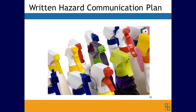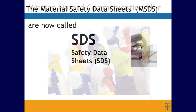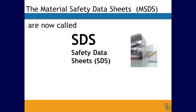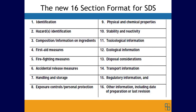In your written hazard communication plan, you'll also review material safety data sheets. Material safety data sheets have been given a new name — the word 'material' has been dropped; now they're simply called safety data sheets, or SDS sheets, instead of MSDSs. These new SDS sheets have a 16-section format that includes information such as properties of each chemical, the physical, health, and environmental hazards, protective measures, and safety precautions for handling, storing, and transporting the chemical. The information must be in English, though it may also be in other languages.